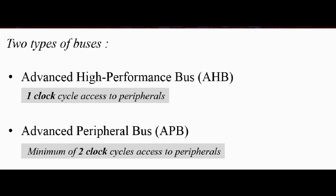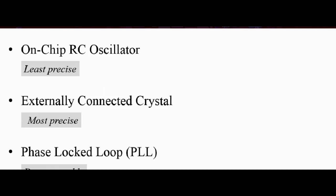Okay, so now let's talk about our microcontroller clock sources. So we have three options for our clock source. We have the on-chip RC oscillator. RC stands for resistor capacitor. So this is the least precise clock. Also, you can connect an external crystal to the microcontroller. And this gives more precision than the on-chip RC oscillator.